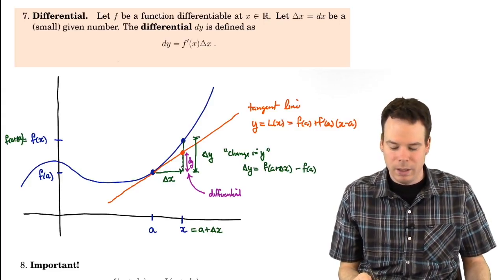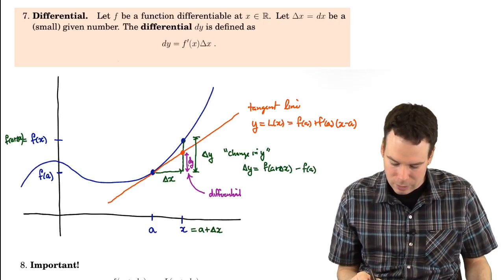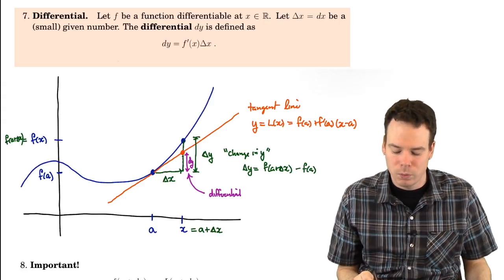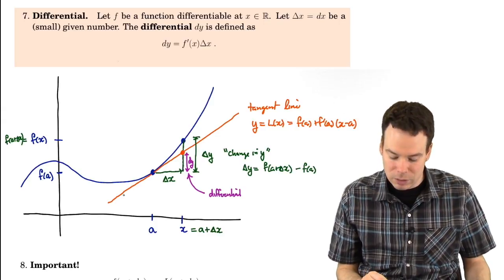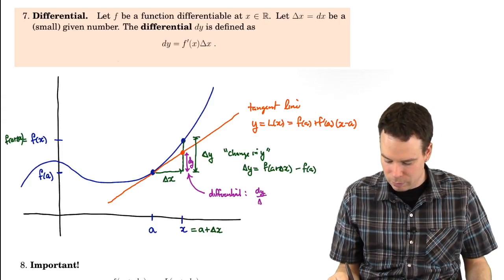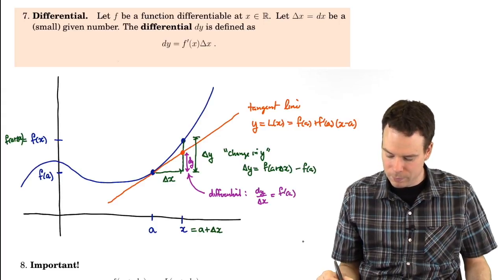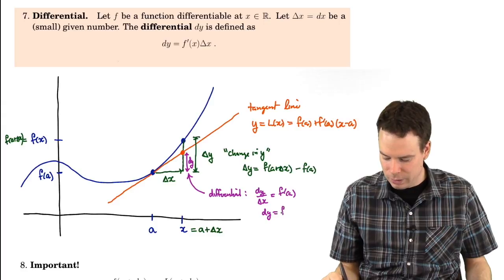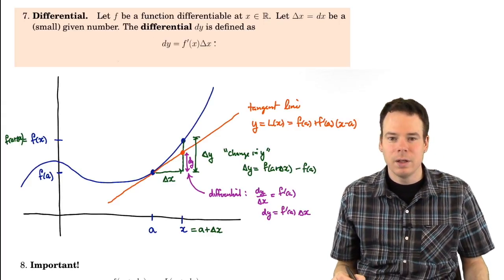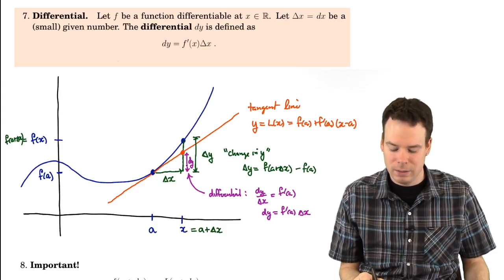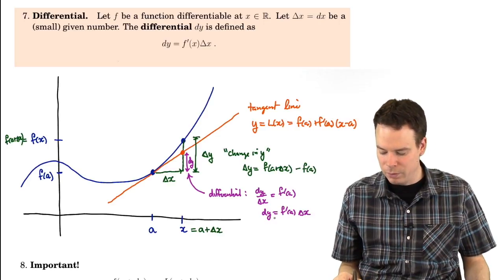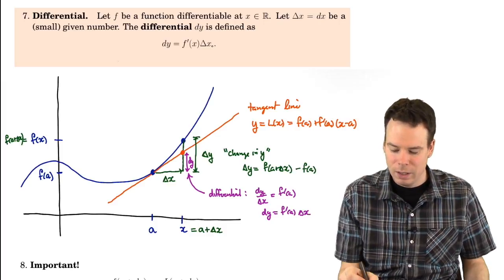Geometrically, that's what it should be. How do we get that it's the derivative times delta x? If that height is dy and this distance is delta x, then rise over run should be the slope of that line — but the slope of the line is the derivative. So dy divided by delta x equals f prime of a, or in other words, dy equals f prime of a times delta x. That's what we've defined the differential to be. Working with that height, we get the expression for how the differential relates to the derivative and the change in x, and that's what we've taken as our definition.